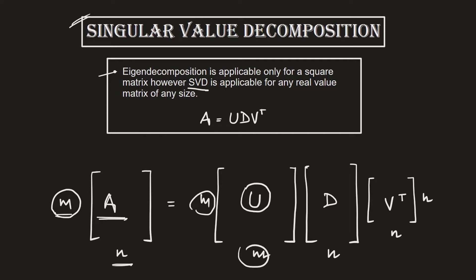U is also called the left singular vector because it corresponds to the number of rows in matrix A. Similarly, V transpose is a matrix of all the eigenvectors corresponding to the number of columns in matrix A, so V transpose will have n rows and n columns, and it is called the right singular vector. D is a diagonal matrix which has the eigenvalues diagonally in decreasing order.